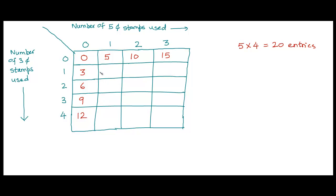The interior entries are more interesting because we are combining one or more three-cent stamps with one or more five-cent stamps. If I used one three-cent stamp and one five-cent stamp, the total is eight cents. With one three-cent and two five-cent stamps, the total is thirteen cents. Moving right across a row adds five each time; moving down a column adds three. So from eight: eleven, fourteen, seventeen going down; from thirteen: sixteen, nineteen, twenty-two.